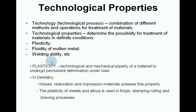Technological properties. Technology or technological process is a combination of different methods and operations for treatment of materials. Technological properties determine the possibility for treatment of materials under definite conditions — plasticity, fluidity of a molten metal and welding ability. Plasticity is the technological and mechanical property of a material to undergo permanent deformation under load; waxes, restorations and impression materials possess this property. The plasticity of metals and alloys is used in forging, stamping, rolling and the drawing process.